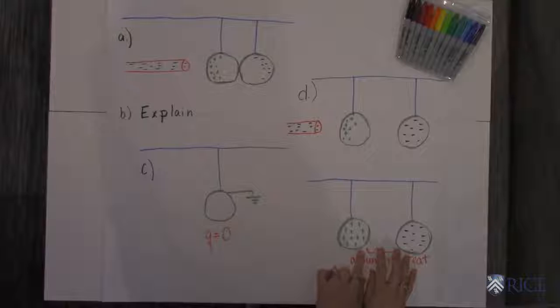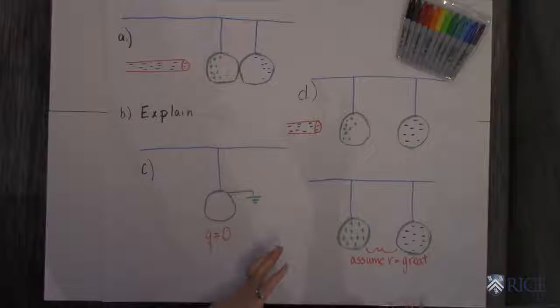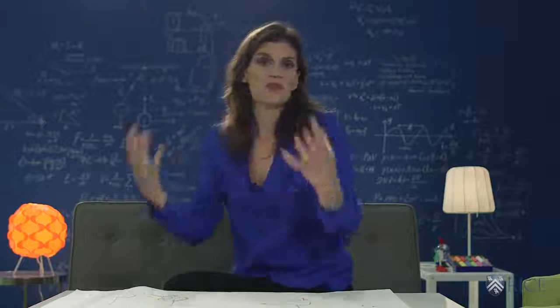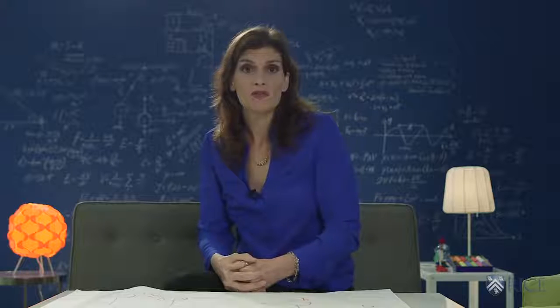What happens is now the spheres are both equally charged, but they have opposite charges, and if you separate them far enough they'll distribute uniformly around the spheres.